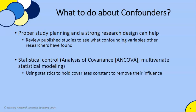Hopefully this was helpful in teaching you a little about what confounding variables are, other names you'll see in the published literature, some examples, and how in an elementary way we can control them so they don't wreak havoc with our study conclusions and implications. Thanks for listening.